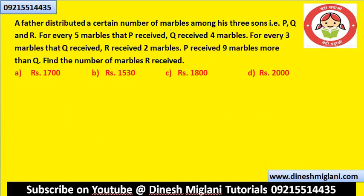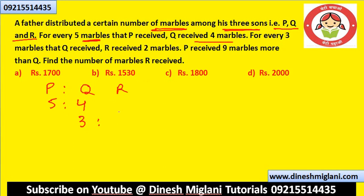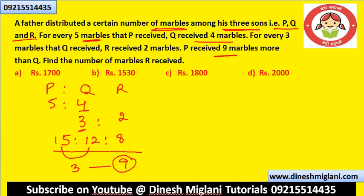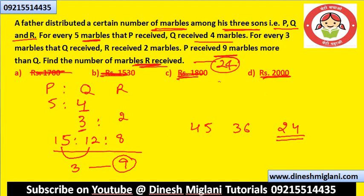A father distributes marbles among three sons P, Q, and R. For every 5 marbles P receives, Q receives 4, so P:Q = 5:4. For every 3 marbles Q receives, R receives 2, so Q:R = 3:2. Making Q common: multiply to get P:Q:R = 15:12:8. Since P receives 9 more marbles than Q, the difference of 3 parts equals 9, so each part = 3. R receives 8×3 = 24 marbles.